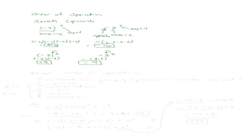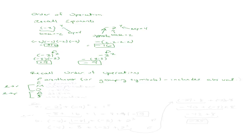Now let's recall the order of operations. This section is really just applying what we've already learned to integers. The order of operations is: parentheses — or grouping symbols, which includes absolute values — then exponents, then multiplication and division, then addition and subtraction. Multiplication and division are done left to right, and addition and subtraction are done left to right as they come.